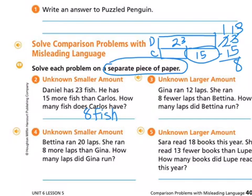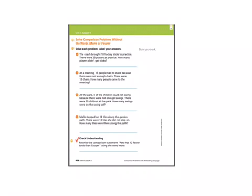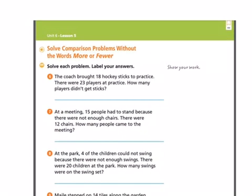I'm going to have you finish up number 3, 4, and 5. Use the Schoology course for today to correct your workbook pages. Let's go to the next page — this is page 406. Solve comparison problems without the words 'more' or 'fewer.' The coach brought 18 hockey sticks to practice. There were 23 players at practice. How many players didn't get sticks? The players we know are 23.